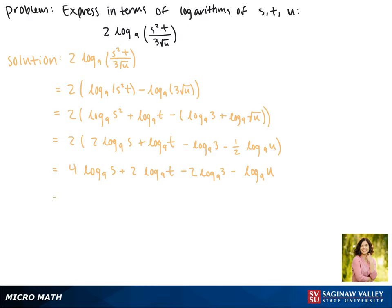This gives us 4 times the log base 9 of s plus 2 times the log base 9 of t minus 1 minus the log base 9 of u. This is as simplified as we can make our expression, and this is our final answer.